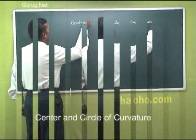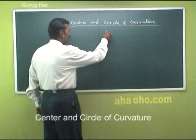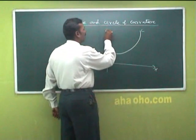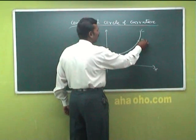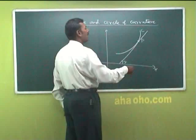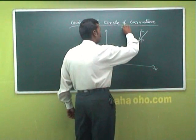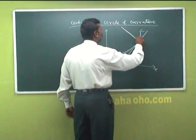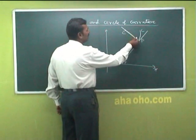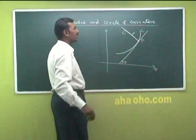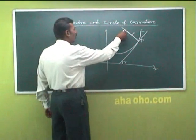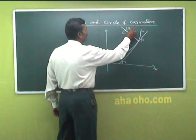Center and circle of curvature. Consider a curve C. You take any point on this curve, call it P. You draw a tangent that makes an angle psi with the x-axis, and an inward normal to the curve C. The length PC′ is called the radius of curvature, where C′ is the center of curvature. The coordinates of C′ are x̄ and ȳ.